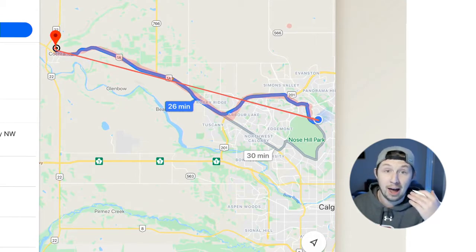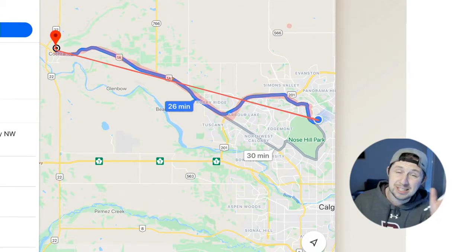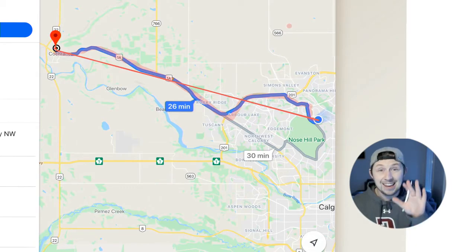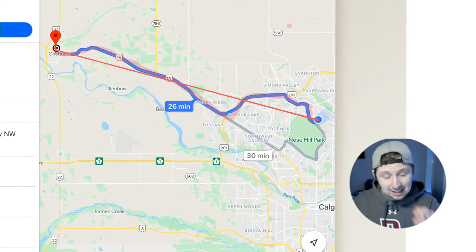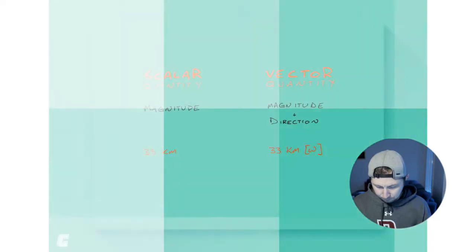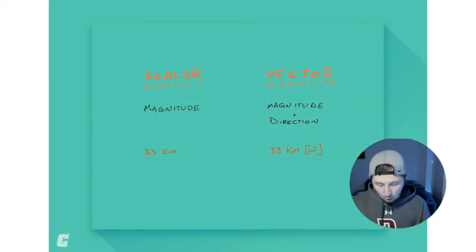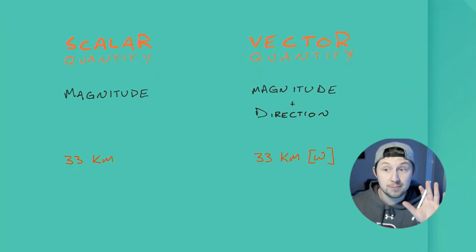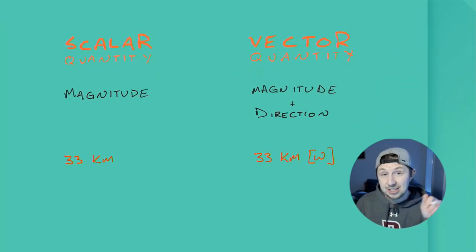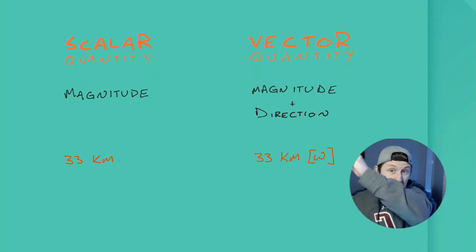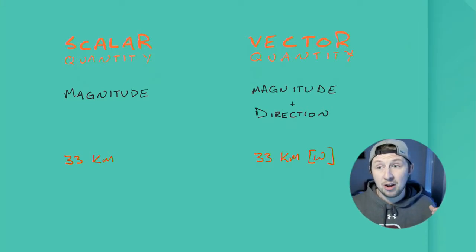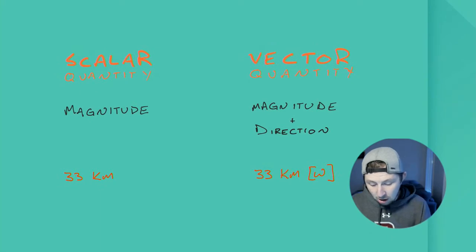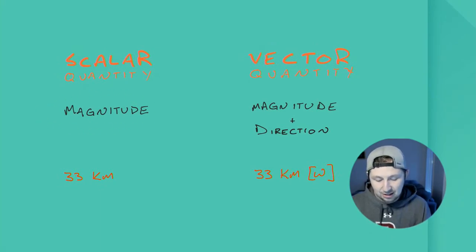This is a really good example of the difference between a scalar quantity and a vector quantity. A scalar quantity is just magnitude — the distance we travel with all those changes along the way as we drive would be considered a scalar quantity. It's only magnitude.